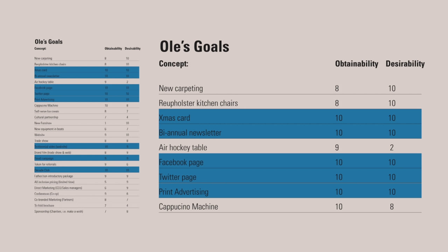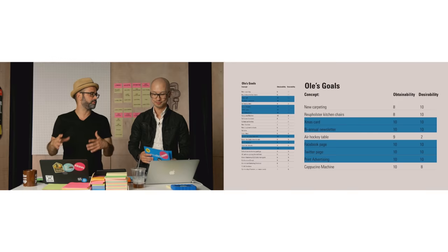Desirability is how badly do we want this thing, again 1 to 10. If you want something really badly and it's really easy to do, it should move to the top of your to-do list. Pulled in tighter on the right side, you can see some of these are relevant — they want to do a Christmas card, a biannual newsletter, work on their Facebook page, Twitter page, and print advertising. None of these seem directly reflective of the website itself.